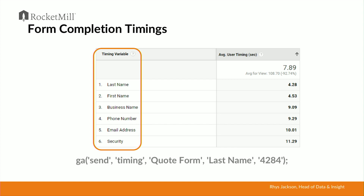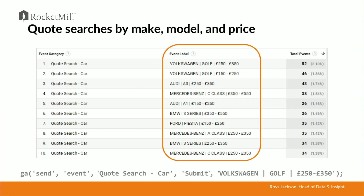In another example, we're looking at form completion timings. For a B2B business that lives and dies on people completing online forms successfully and efficiently, you can immediately see how long it takes users to complete each form and which forms might need optimisation. Finally, this is event tracking looking at quote searches by make, model, and price on a vehicle leasing website — and you can immediately start to see differences between different types of customer. The user searching for a budget Volkswagen is likely a very different type of customer from those searching for an Audi A3 or Mercedes-Benz.